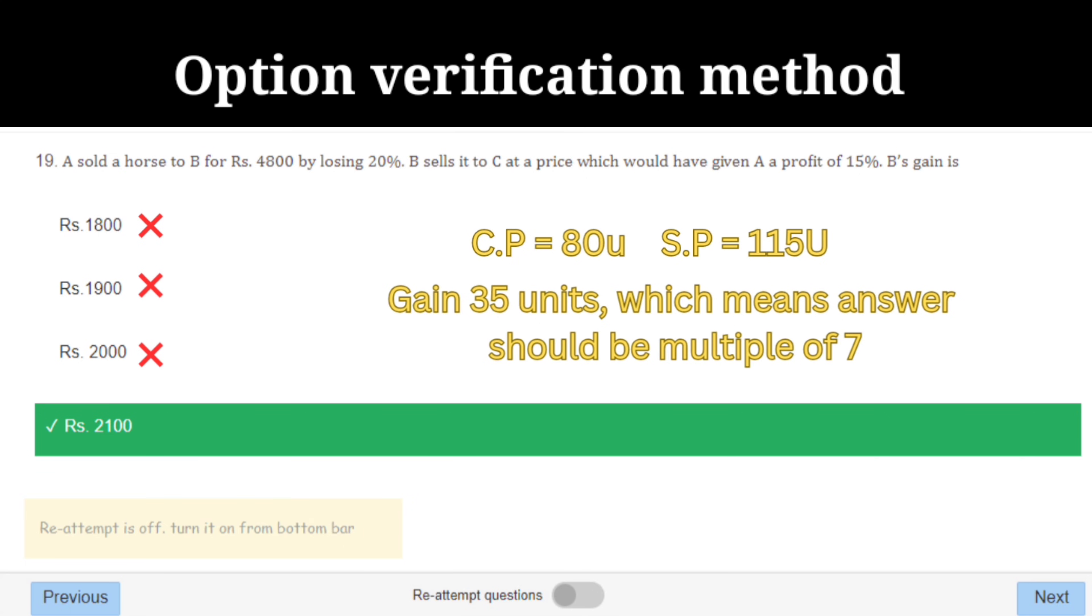Which is B's gain? If you take 100 as base, then the CP will be 80 and SP will be 115, which means he gains 35 units. So the final answer should be a multiple of seven. Just verify the options.